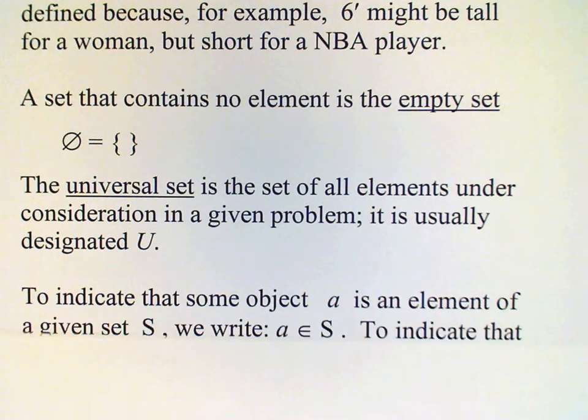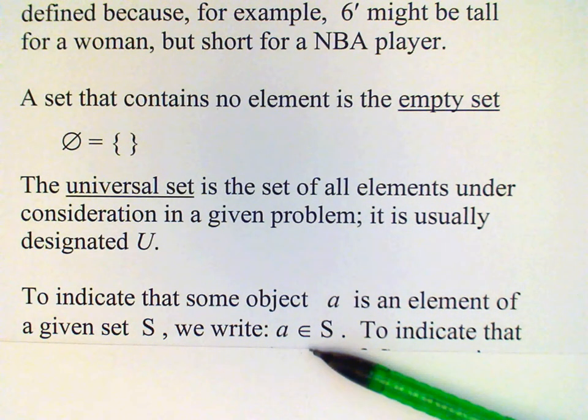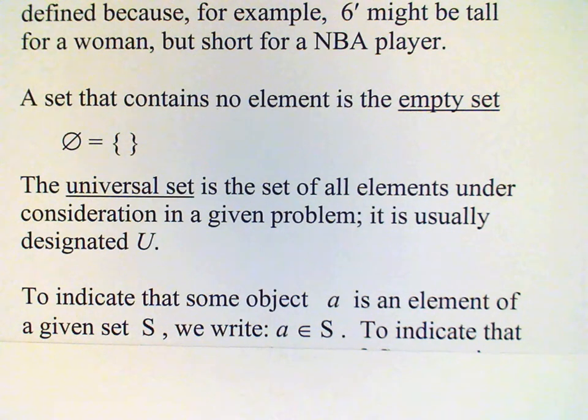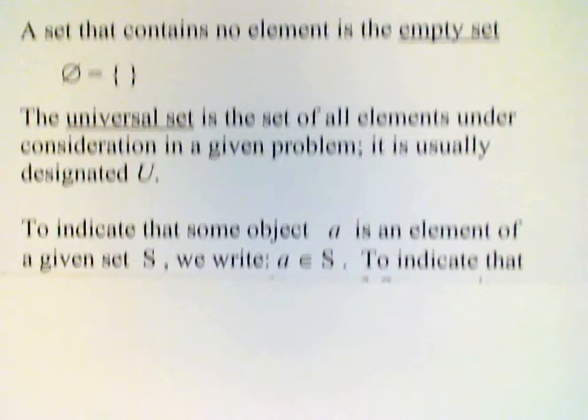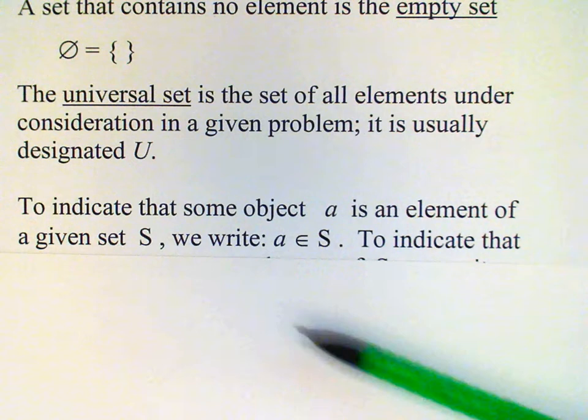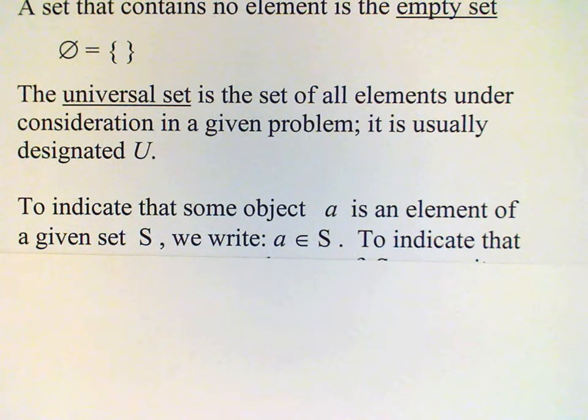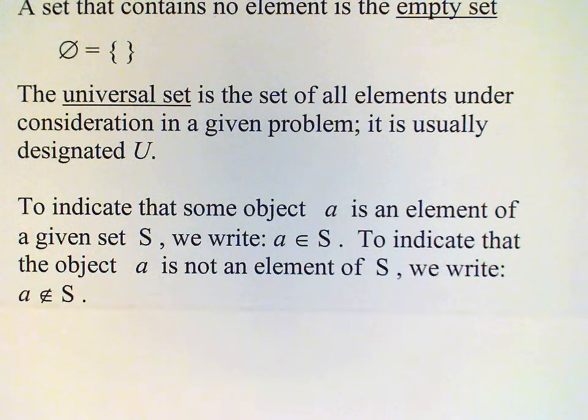Now to indicate that some object A is an element of the given set, we use this symbol here. And this symbol is read as is an element of. So if we have an object A in a set S, then we would read that as A is an element of S. On the other hand, if we wanted to say that that element is not in the set, then we simply draw a line through that special symbol and read as A is not an element of S.